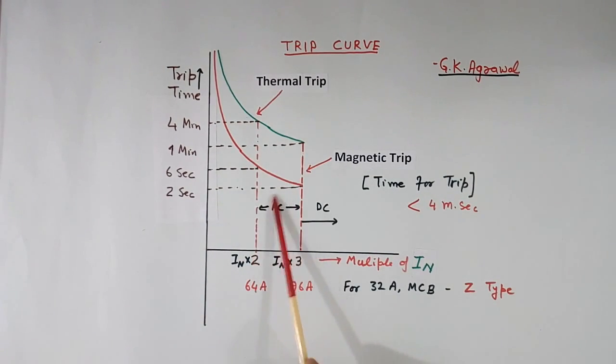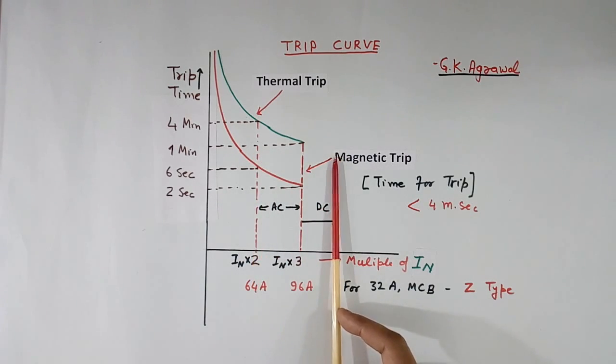This is for AC current. If current is DC, this line will shift. Generally this current will be 1.5 times of this. So for DC current, range can be anything from here to here.